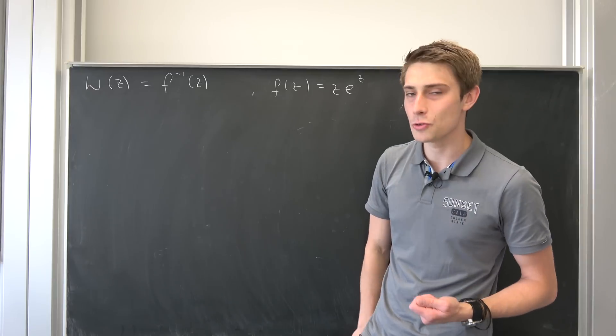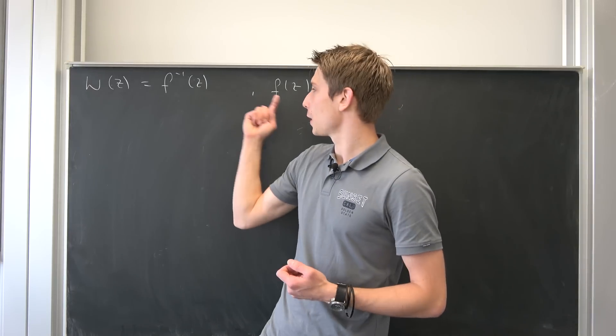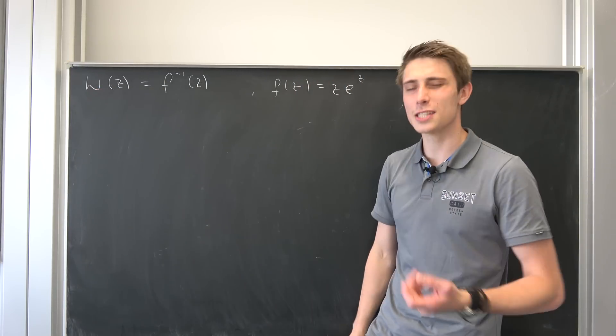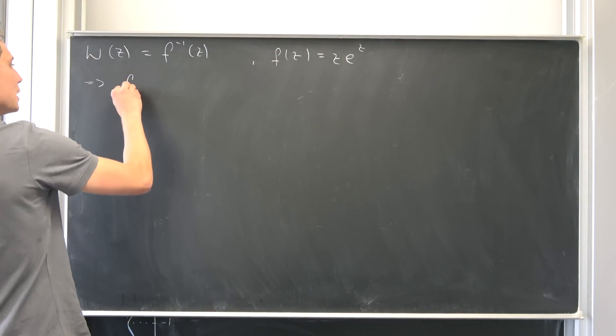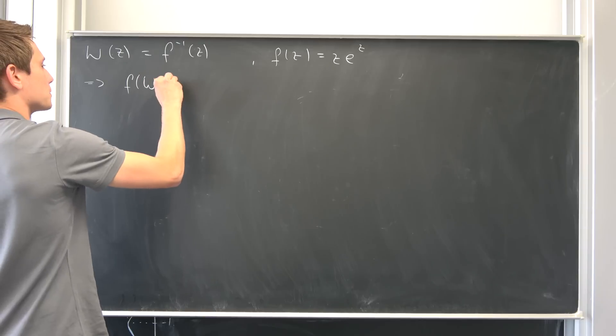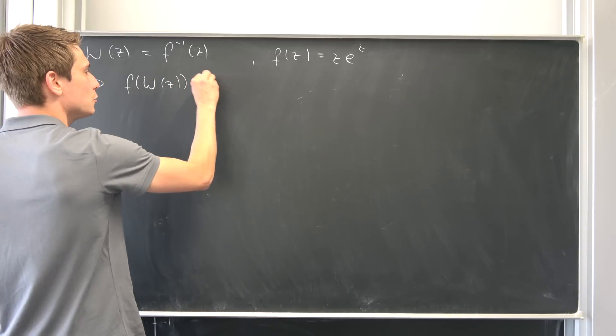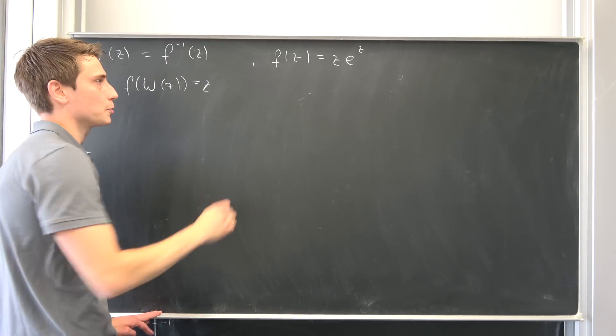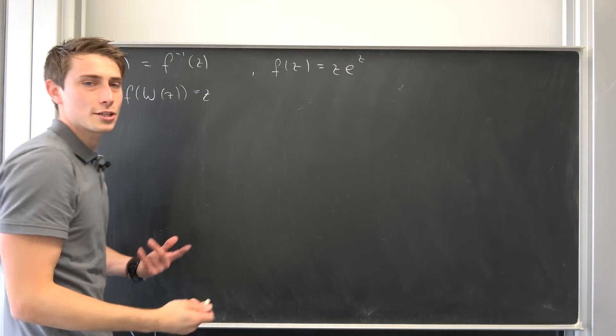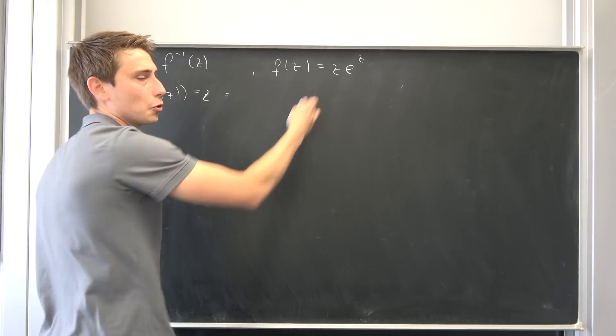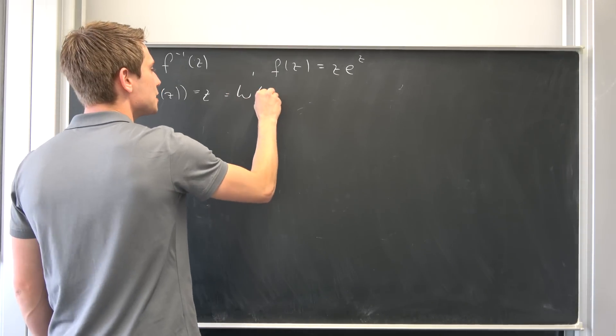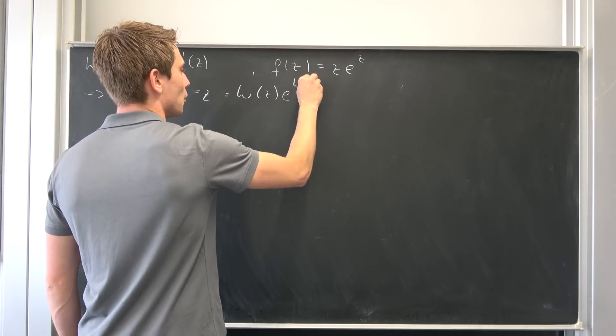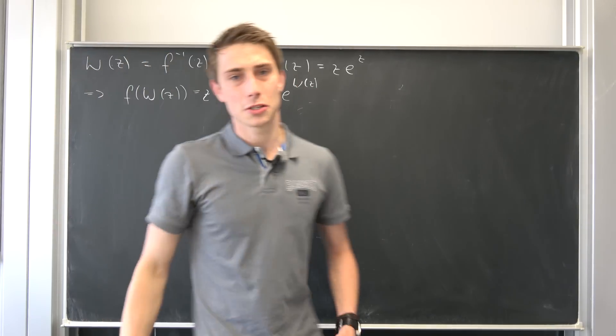Because if you know a thing or two about functions, if you apply the function to the inverse function, you're just going to end up with the argument itself. So we can conclude that f of Lambert of z is going to evaluate to just z. But you also have to plug in the Lambert of z into all those z's. So this is Lambert of z times e to the Lambert of z.